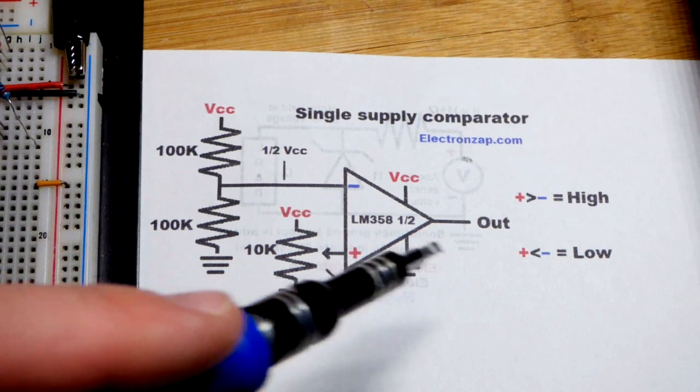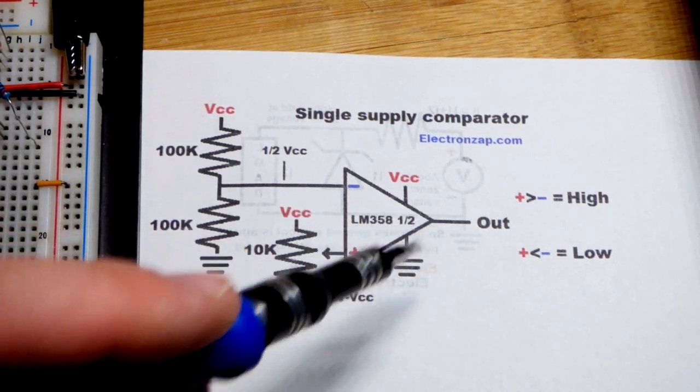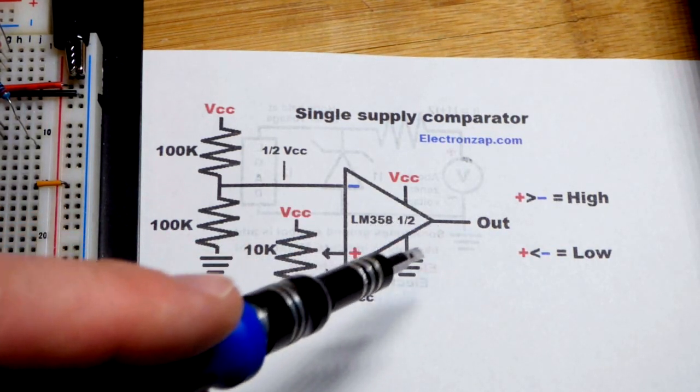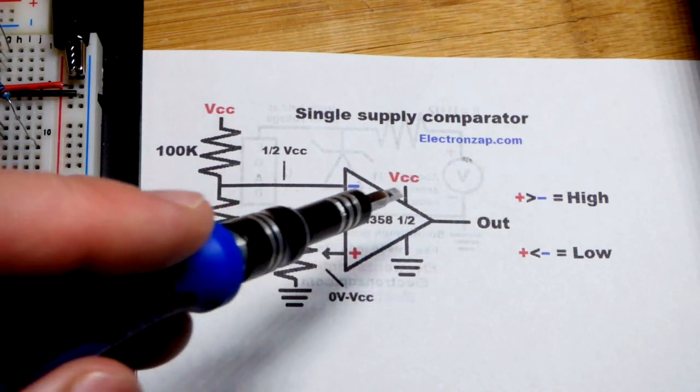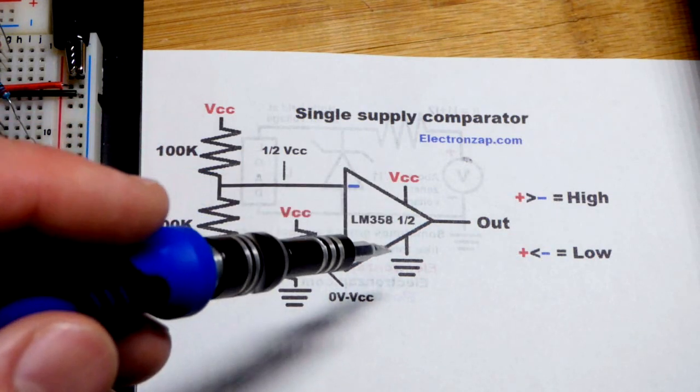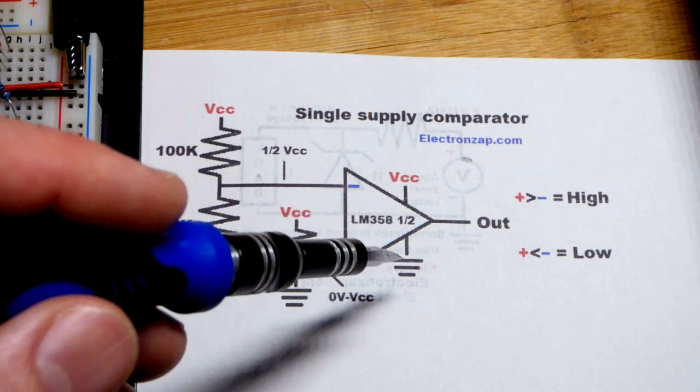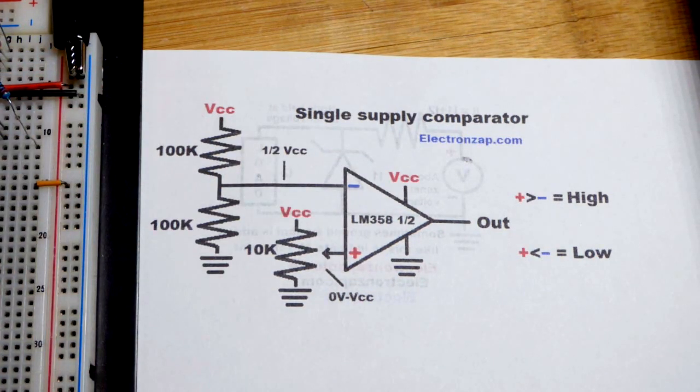But in any case, that means that the output can go directly to ground or almost directly to ground. It probably doesn't get all the way to VCC though, which is pretty common for integrated circuits. And some op amps are made to get really close to either one of the rails. They're called rail to rail op amps.